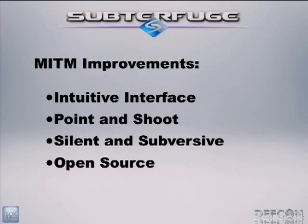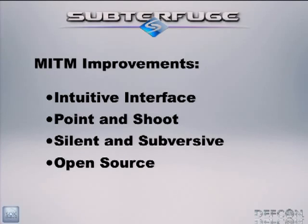It's also very point and shoot. There's a start button in the right-hand corner — you click it, it asks if you want it to do everything for you, you hit okay and you're on. It's also really silent and subversive. Unlike most man in the middle tools that spam ARP, Subterfuge has a couple of innovations for poisoning a network that allow it to be a lot more silent and transparent, making it very hard for the victim to realize they're being exploited.